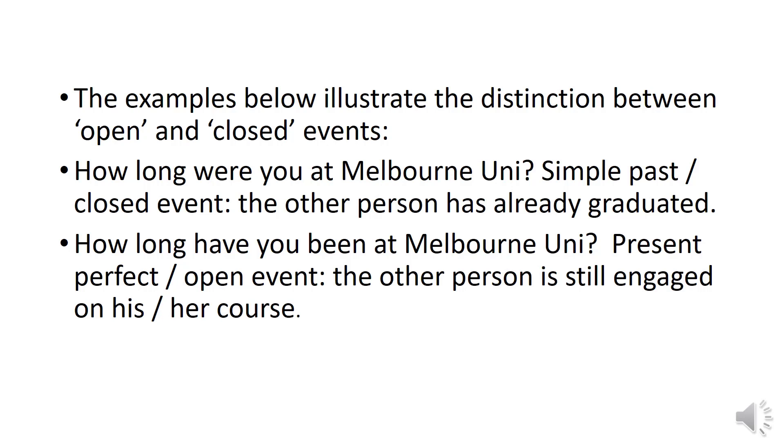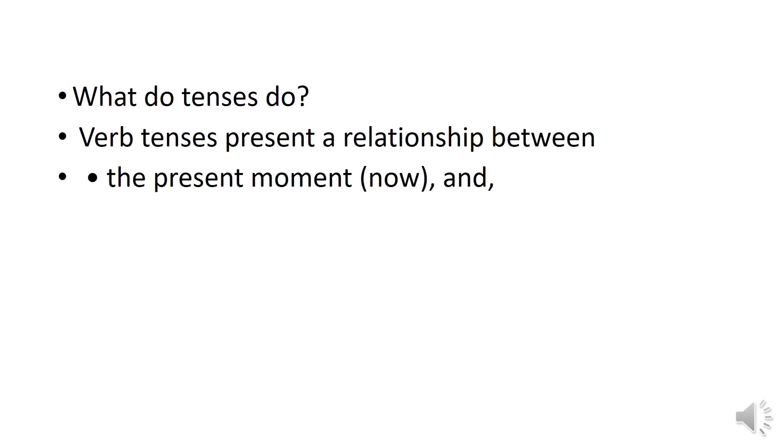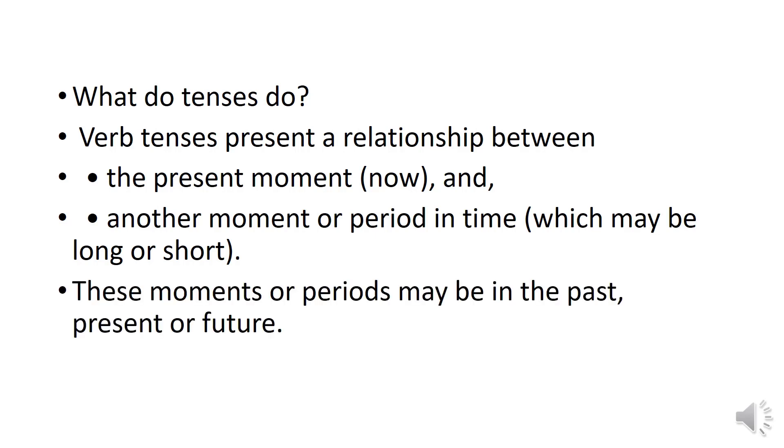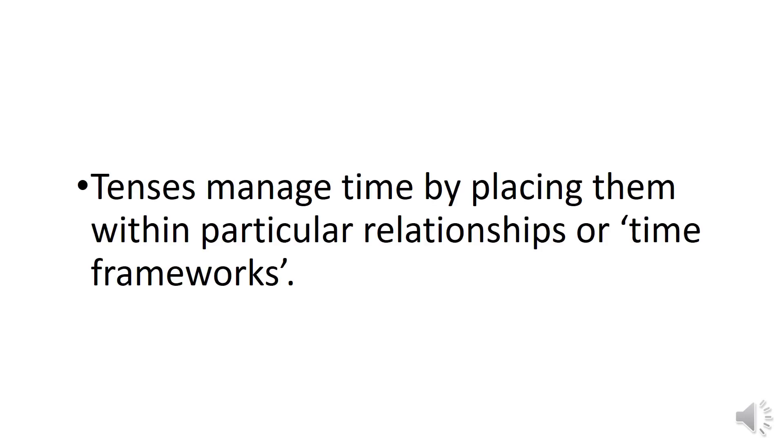What do tenses do? Verb tenses present a relationship between the present moment now and another moment or period in time, which may be long or short. These moments or periods may be in past, present, or future. Tenses basically manage time by placing them within a particular relationship or time framework.